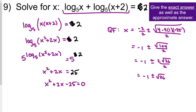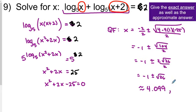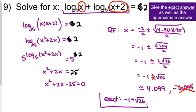In logarithms, the argument has to be positive, which means x and x plus 2 must both be positive. Negative 1 plus square root of 26 is approximately 4.099, and negative 1 minus square root of 26 is approximately negative 6.099. We don't want the negative one because it gives a negative argument in the logarithm. So our exact answer is negative 1 plus square root of 26, and our approximate answer is 4.099.